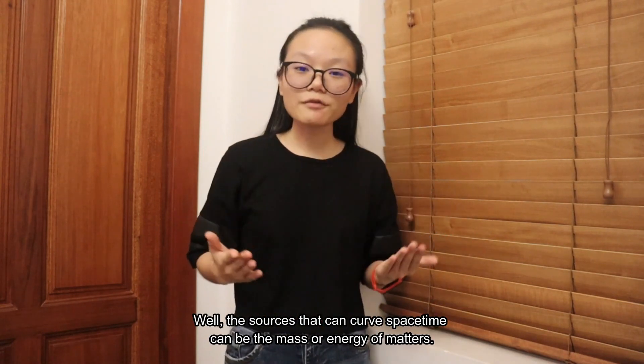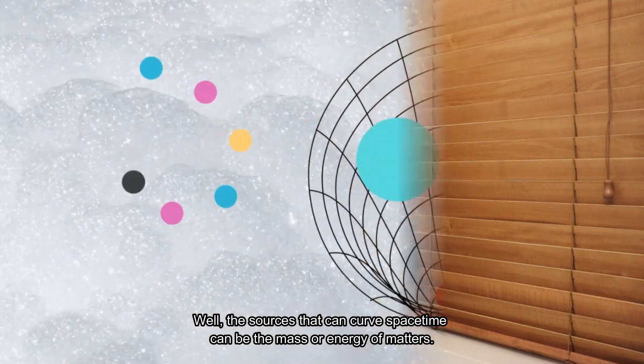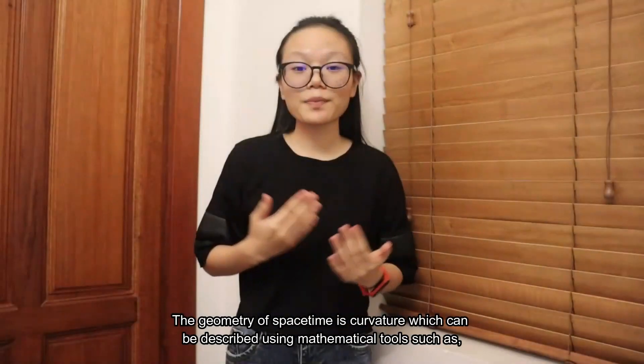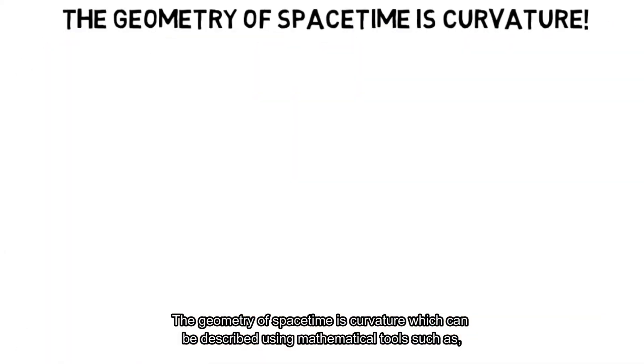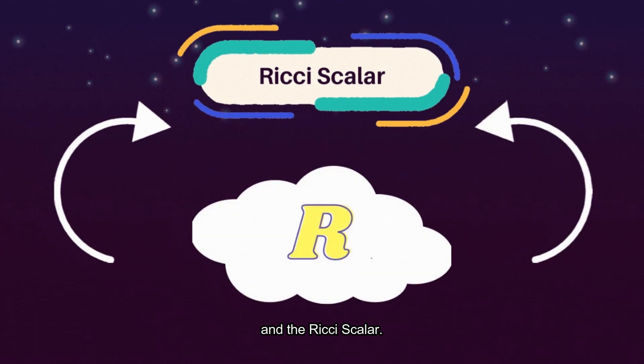The sources that can curve space-time are the mass or energy of matter. The geometry of space-time's curvature can be described using mathematical tools such as the metric tensor, the Riemann tensor, the Ricci tensor, and the Ricci scalar.